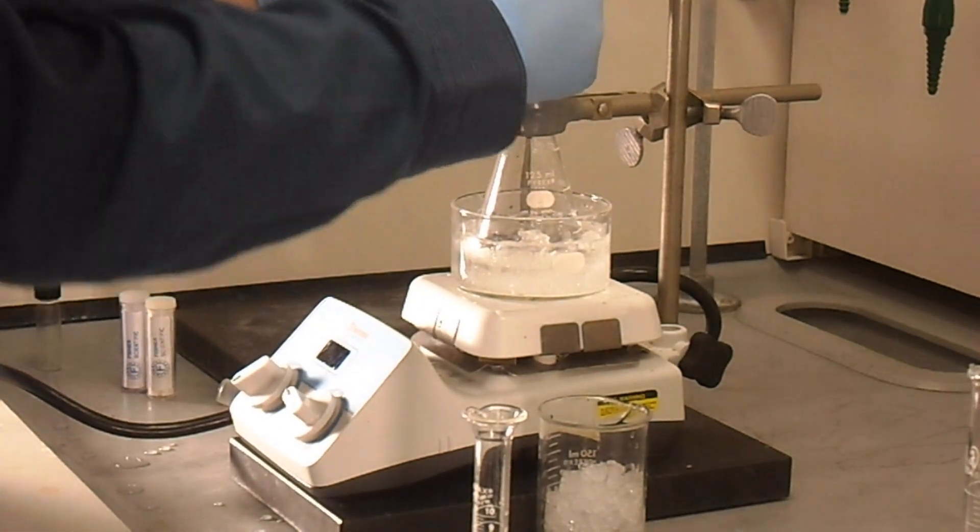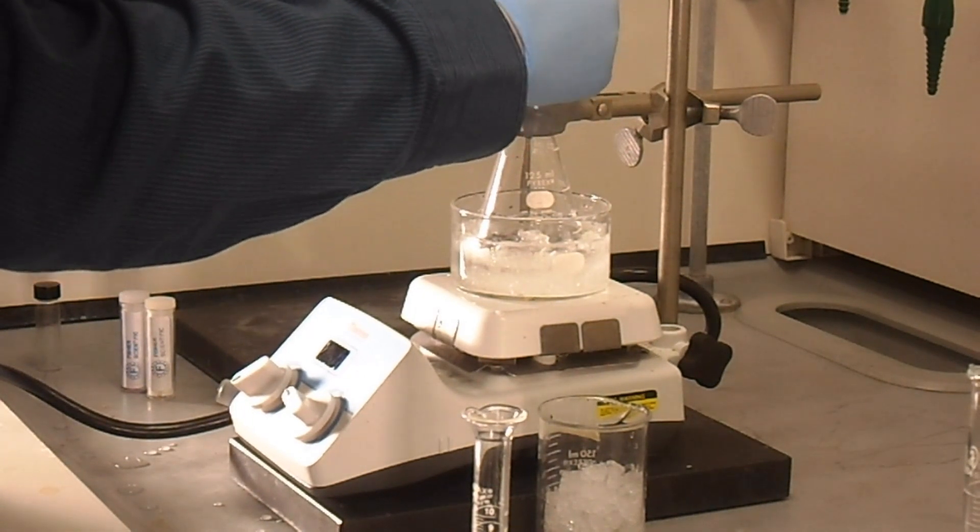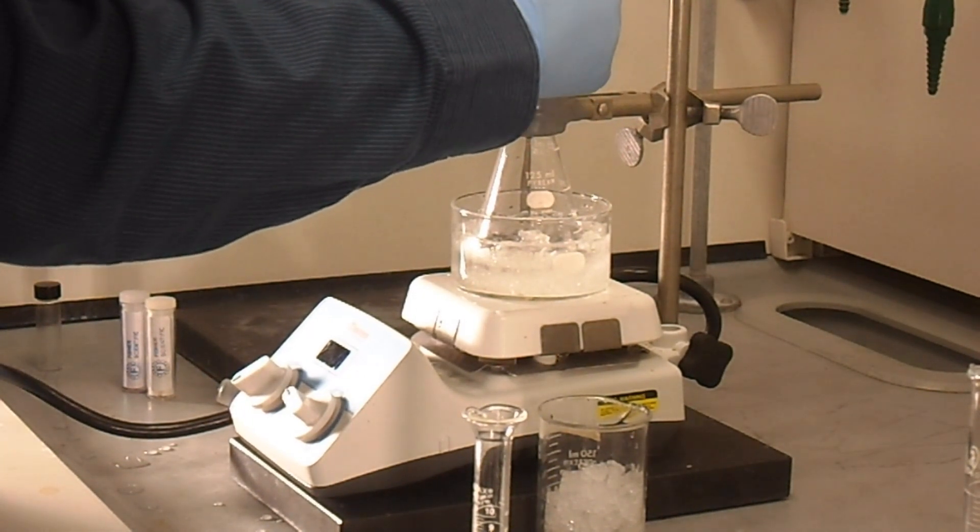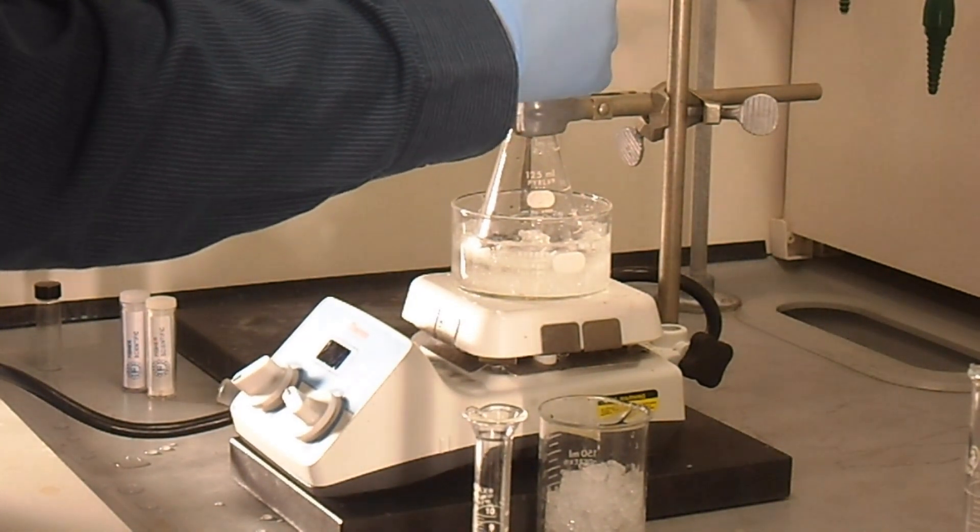So once that's been situated, we're going to open our stopcock to just dropwise. This way our bleach will be added into our reaction at a dropwise rate for about four to five minutes.